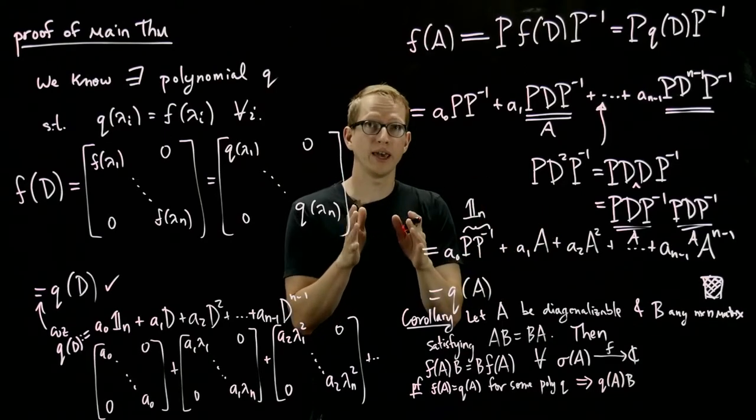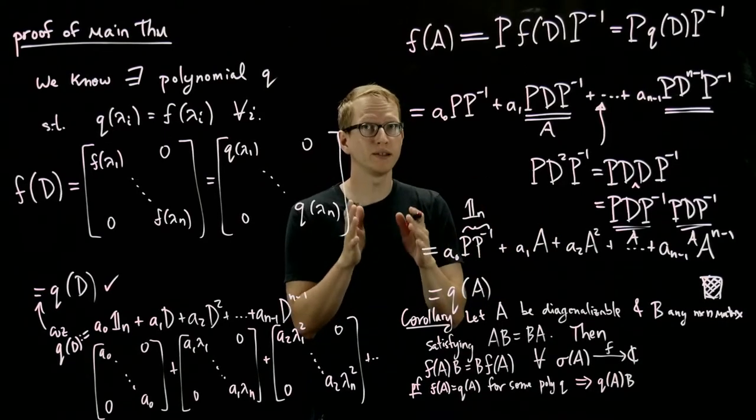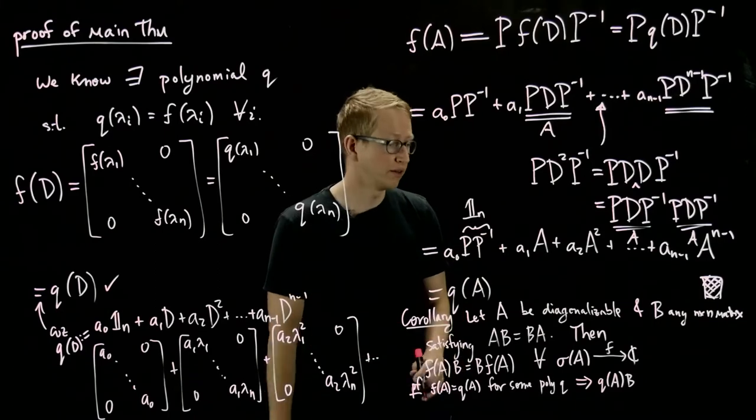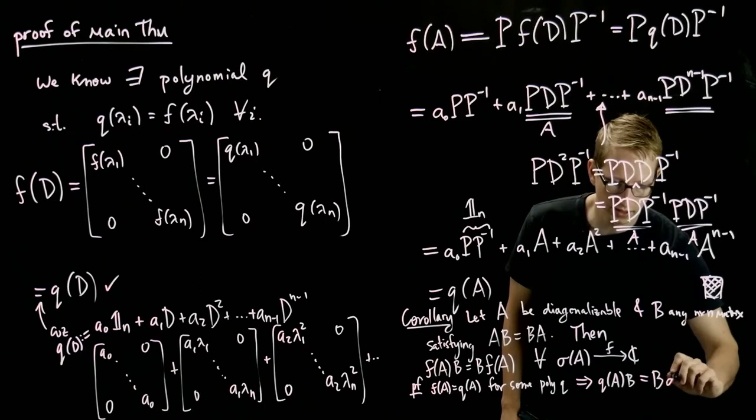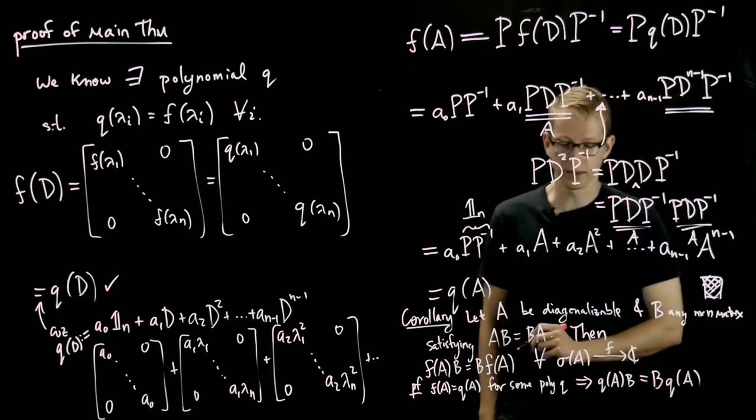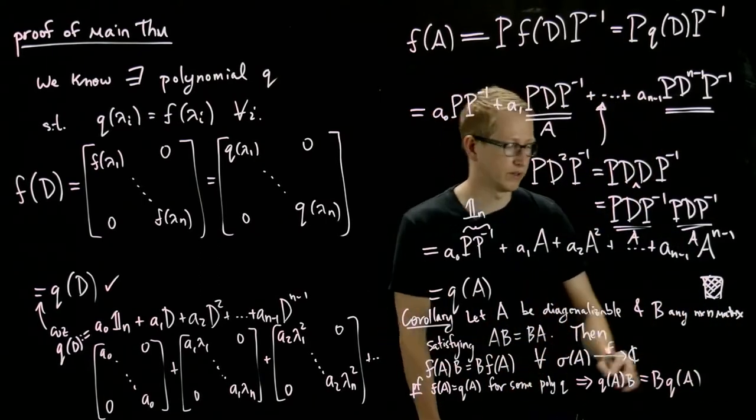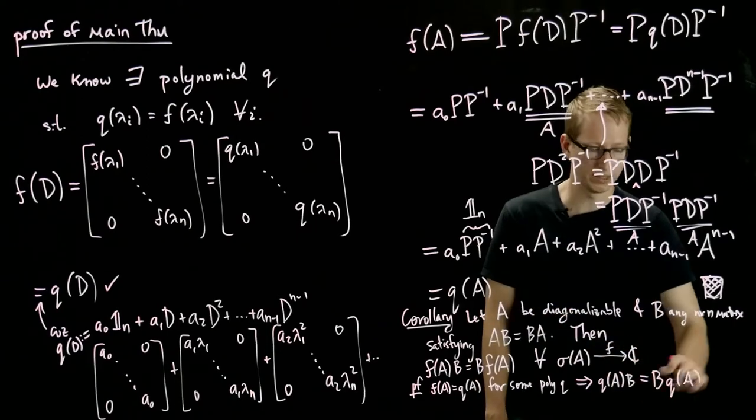You can move them over one at a time. Therefore, A to the jth times B equals B times A to the jth. Therefore, it's immediate that this equals B times q of A. And it immediately solves this problem because q of A equals f of A.